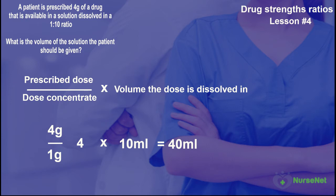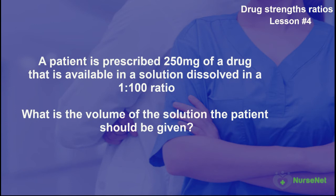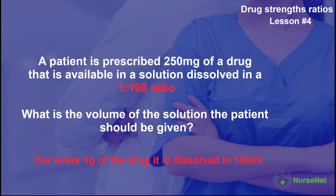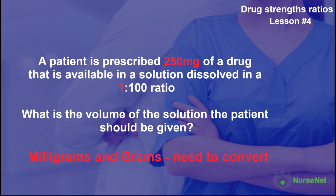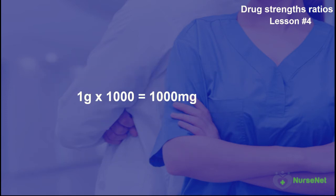Let's do another example with increased complexity. A patient is prescribed 250 milligrams of a drug that is available in a solution dissolved in a 1 to 100 ratio. How much of the solution should the patient be given? The patient's prescribed dose is 250 milligrams. The ratio of 1 to 100 means that for every gram of the drug, there is 100 milliliters that the drug is dissolved in. We now have two different units — milligrams and grams — so we need to convert them into the same metric. We multiply 1 gram by a factor of 1,000 to convert it into milligrams: 1 multiplied by 1,000 gives us 1,000 milligrams.